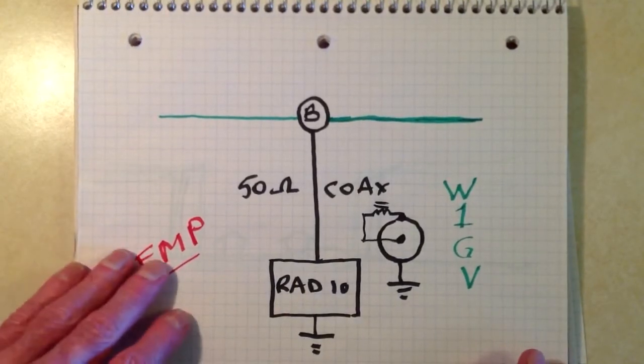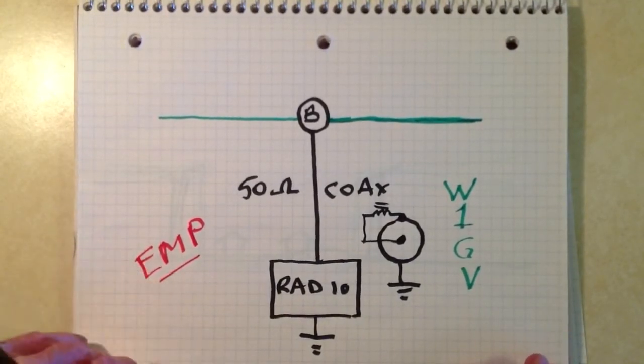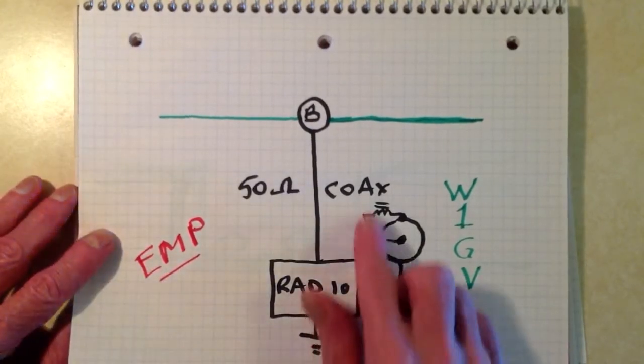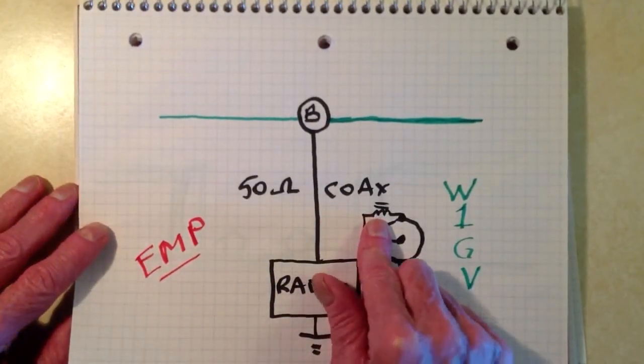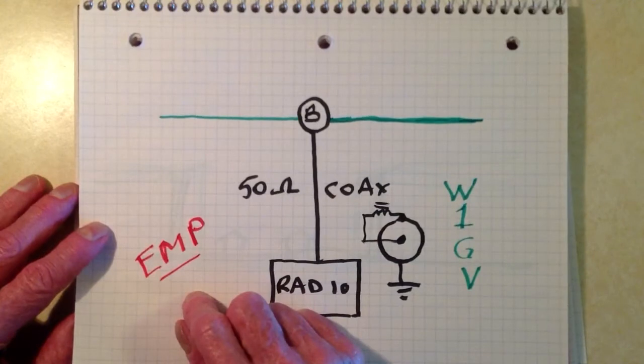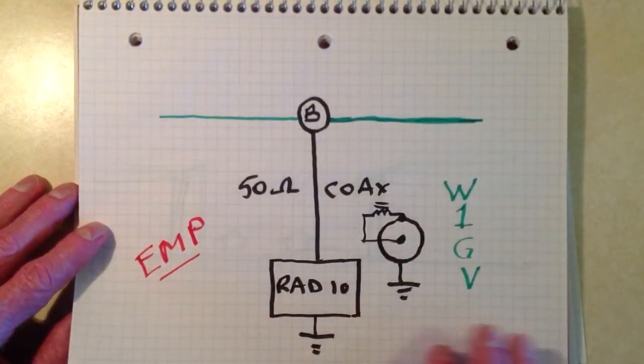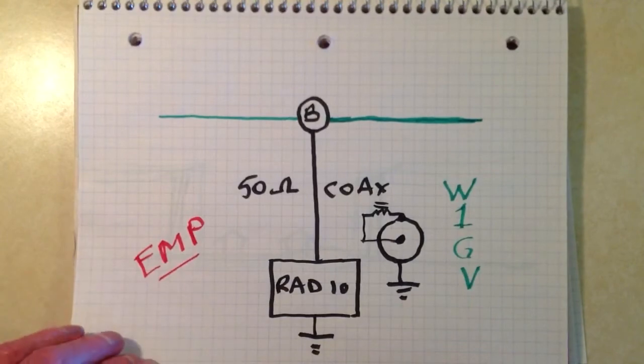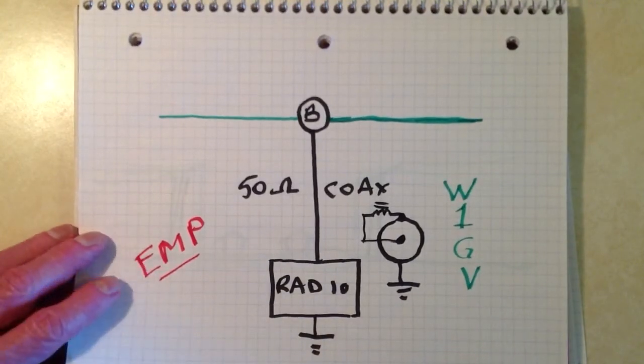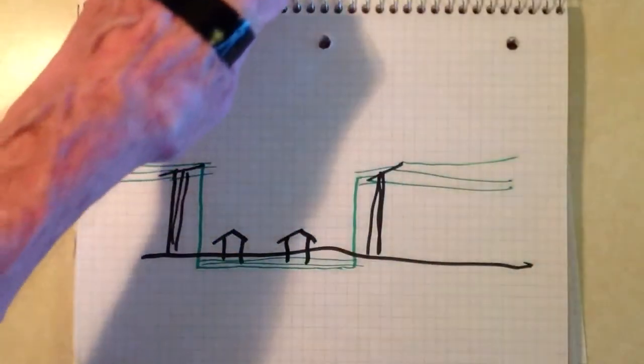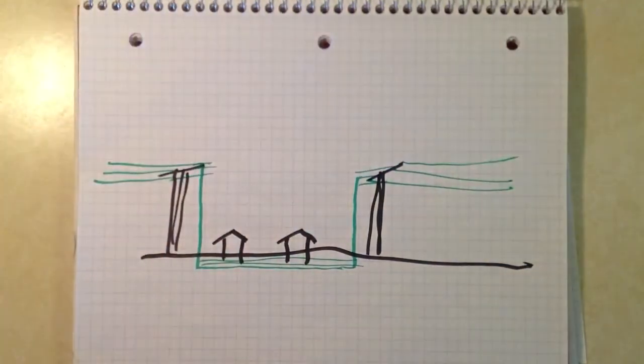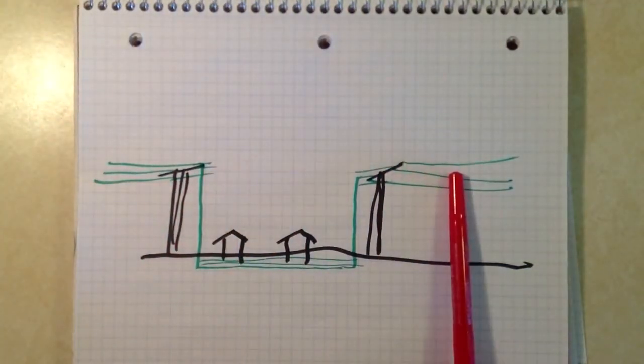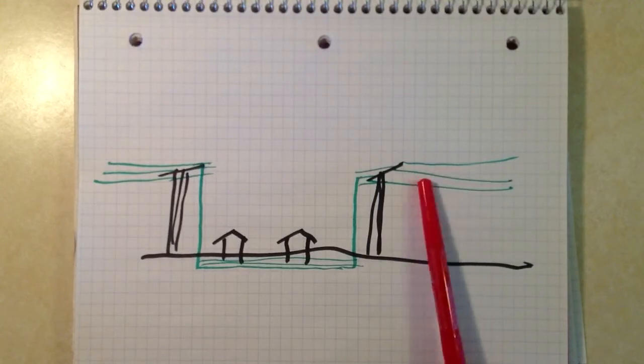There are other arrangements that can be made to protect other types of antennas, some of which involve inductors like this, some of which actually involve terminating the antenna in an electrical ground at the far end. But, the other aspect of electromagnetic pulse that I'd like to talk about now has to do with utility power lines and utility infrastructure.